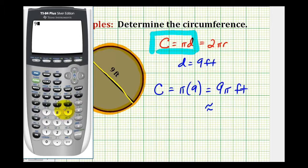If we press nine and then second exponent key here, notice how the pi appears on the screen. You can press enter. So if we round to the hundredths, the circumference is approximately twenty-eight point two-seven feet.